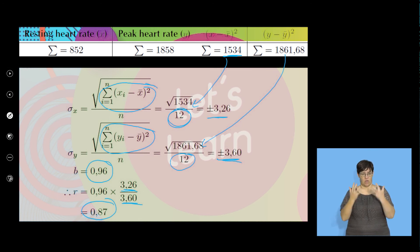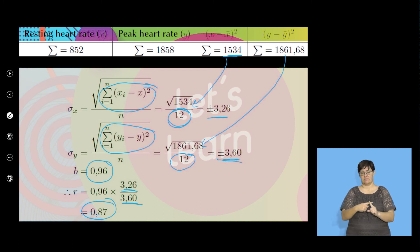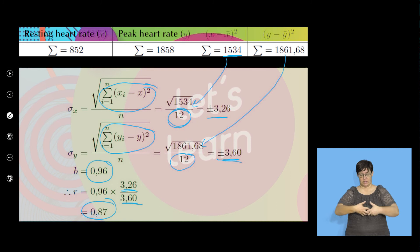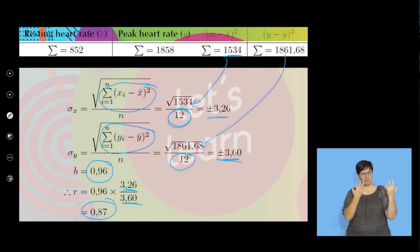Then what we do is: R = b times (sigma x over sigma y), and we multiply the two. That gives us r = 0.87, which is actually strong positive correlation — without using a calculator.